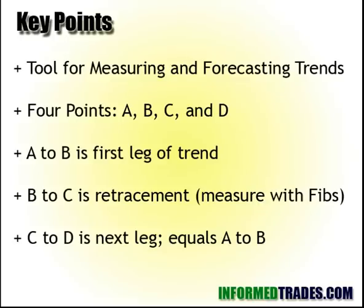Key points: it is a tool for measuring and forecasting trends. The way the indicator works, there are four points you want to keep an eye out for and draw on the chart — points A, B, C, and D. A to B is the first leg of the trend, B to C is the retracement measured using Fibonacci lines, and C to D is the next leg of the trend. The anticipated length of C to D is equal to the length of A to B, making C to D the main trade opportunity with the AB equals CD pattern.